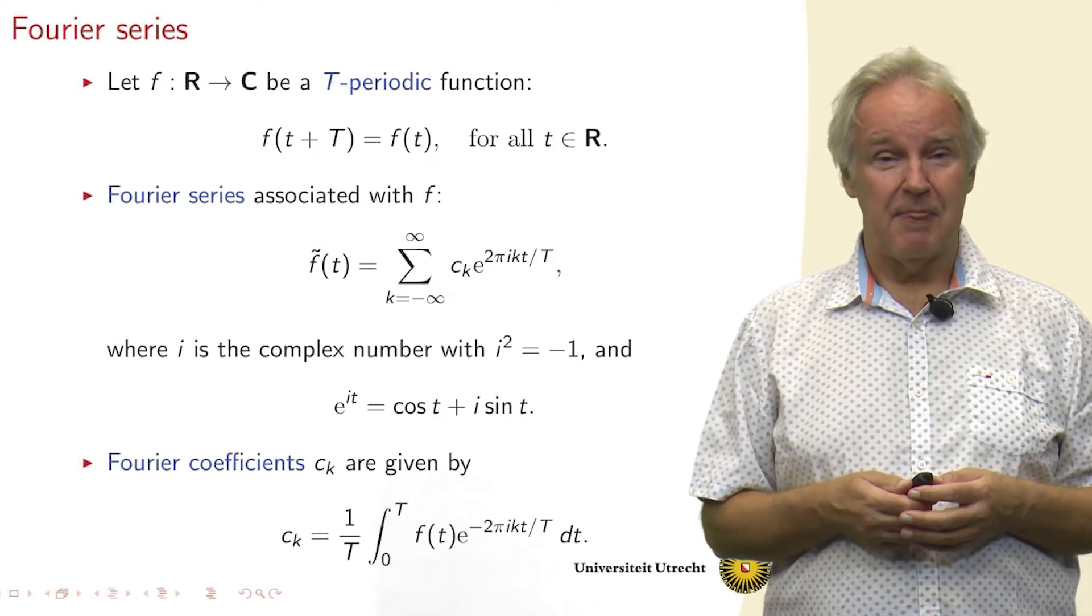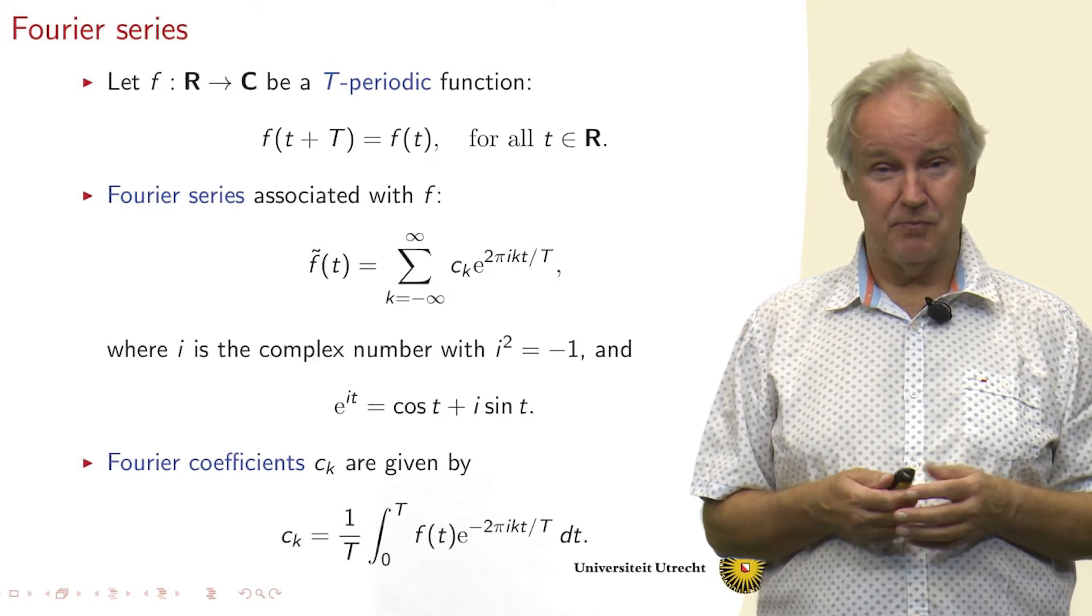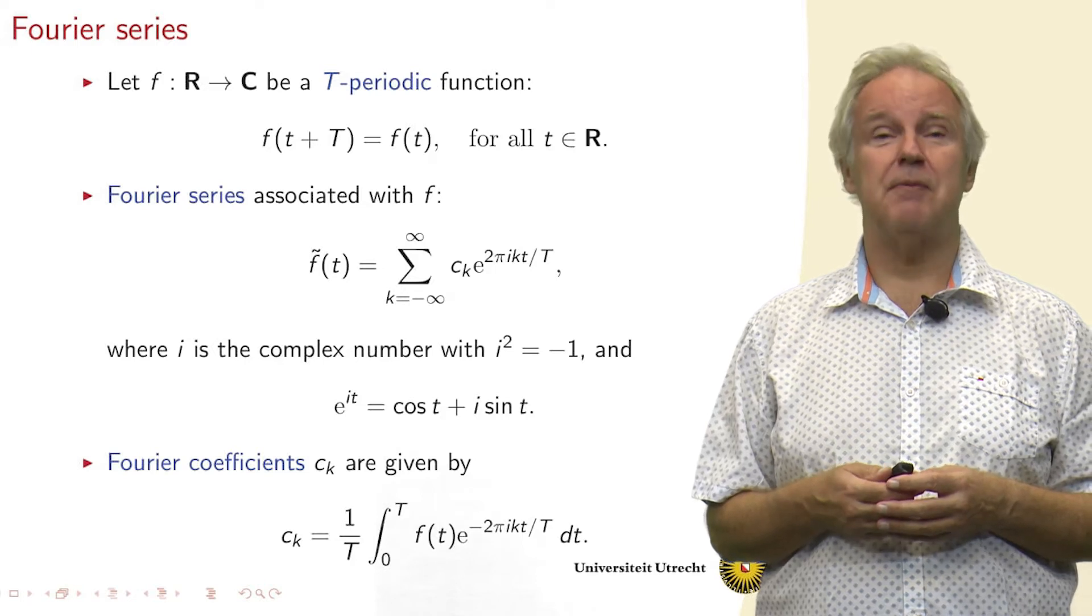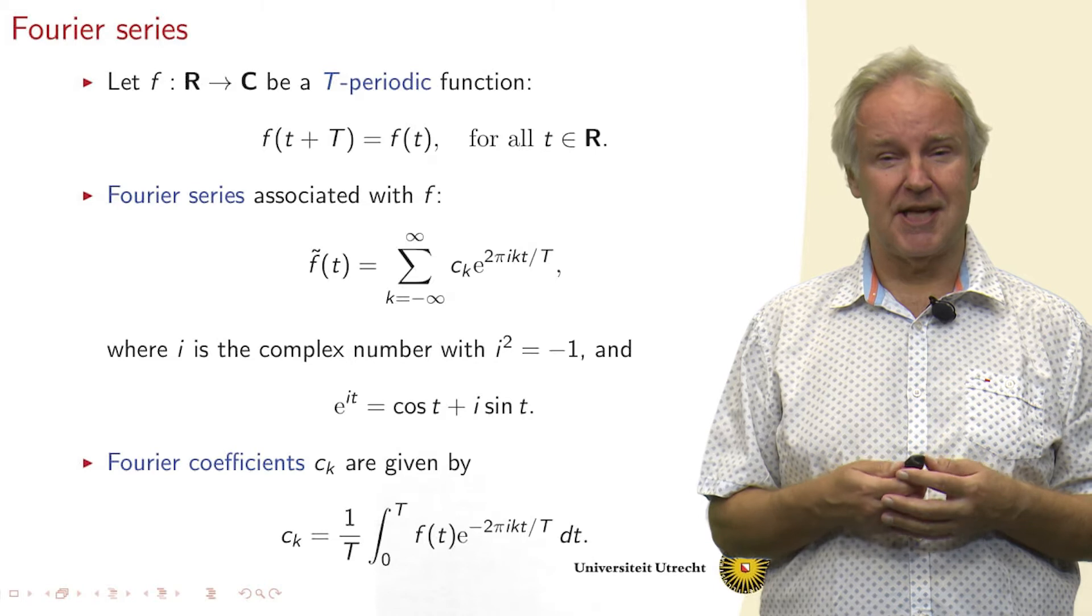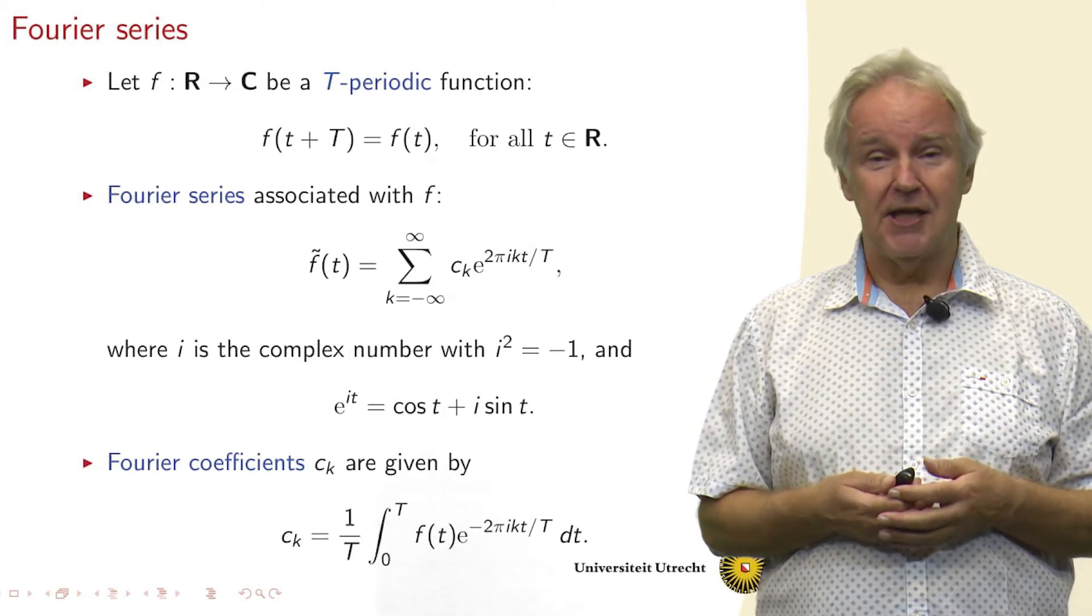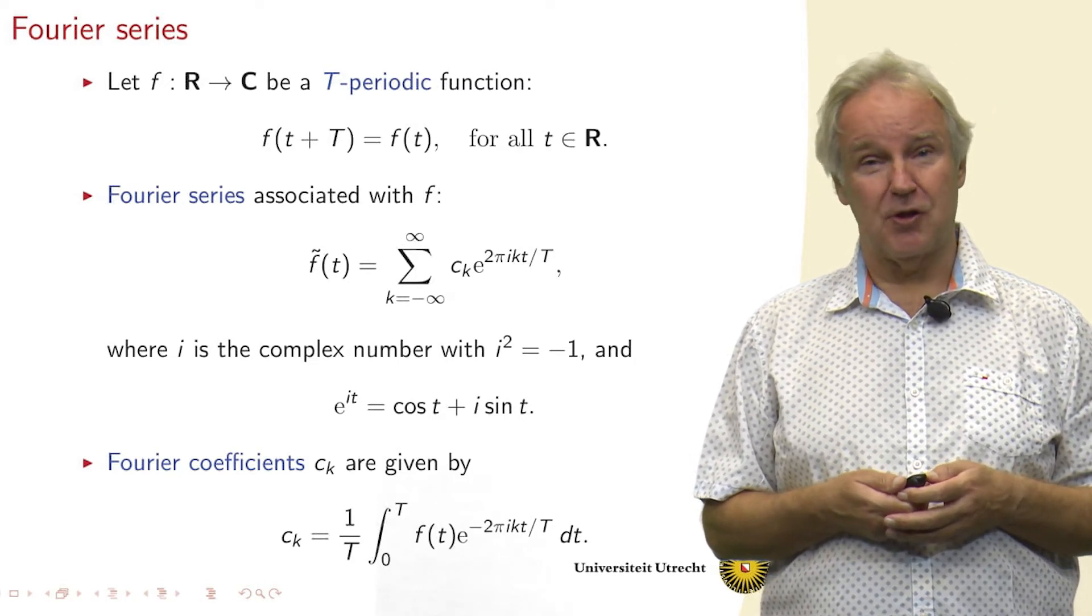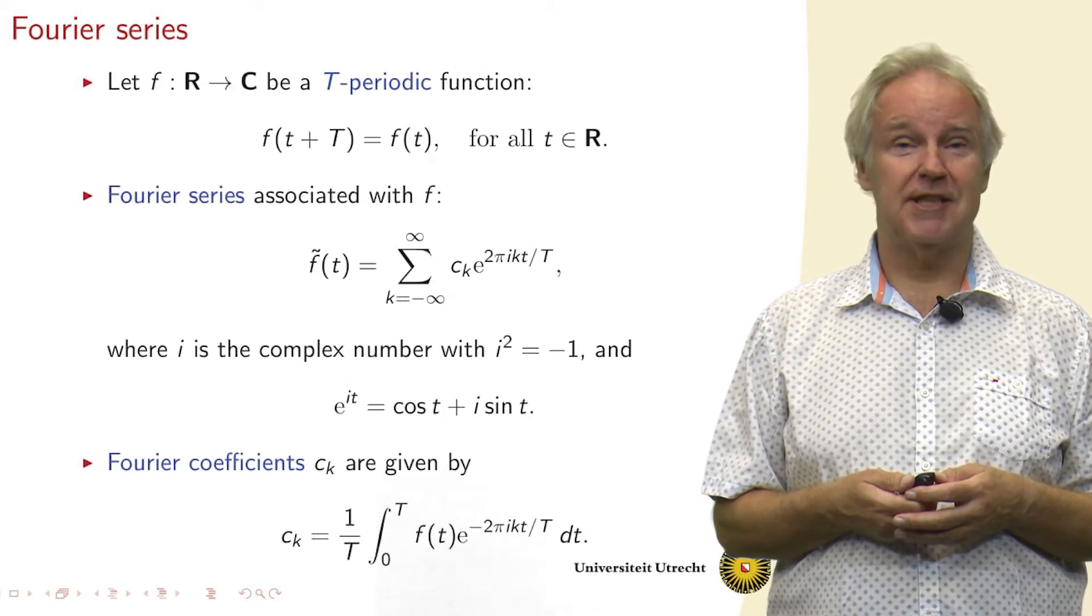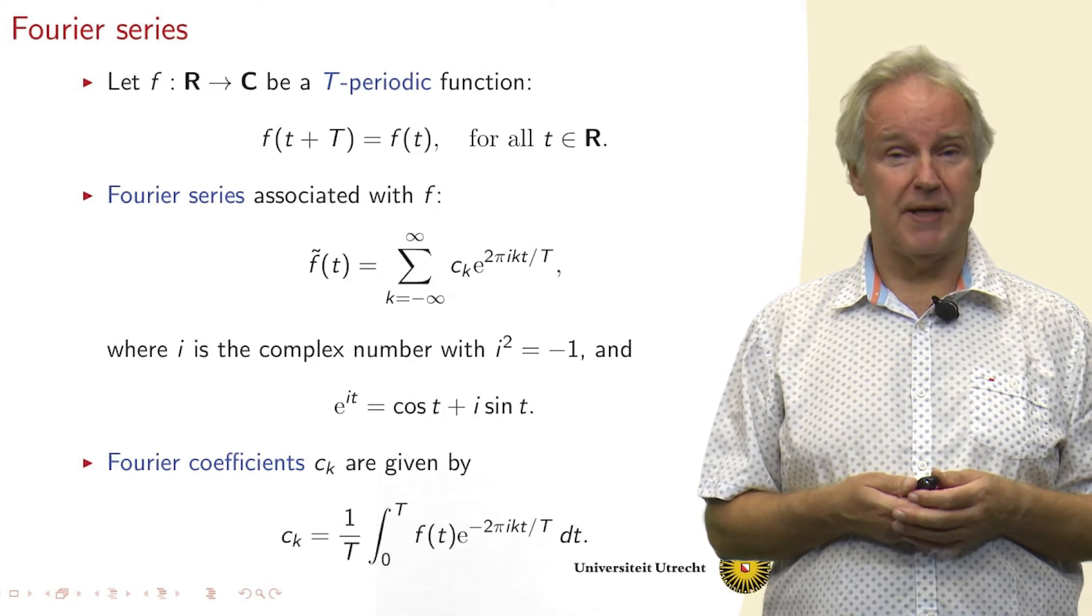Then we can write the function as the sum of ck, coefficient ck, times e to the power 2 pi i kt divided by the period, which is capital T. And e to the power i kt, as we all know, is the cosine of t plus i times the sine of t, where i is the complex number with i squared equals minus 1.